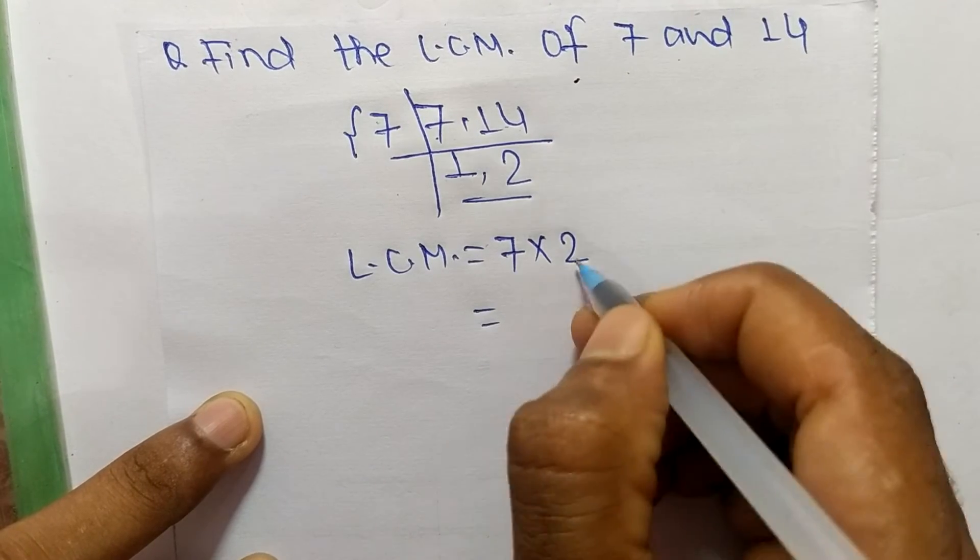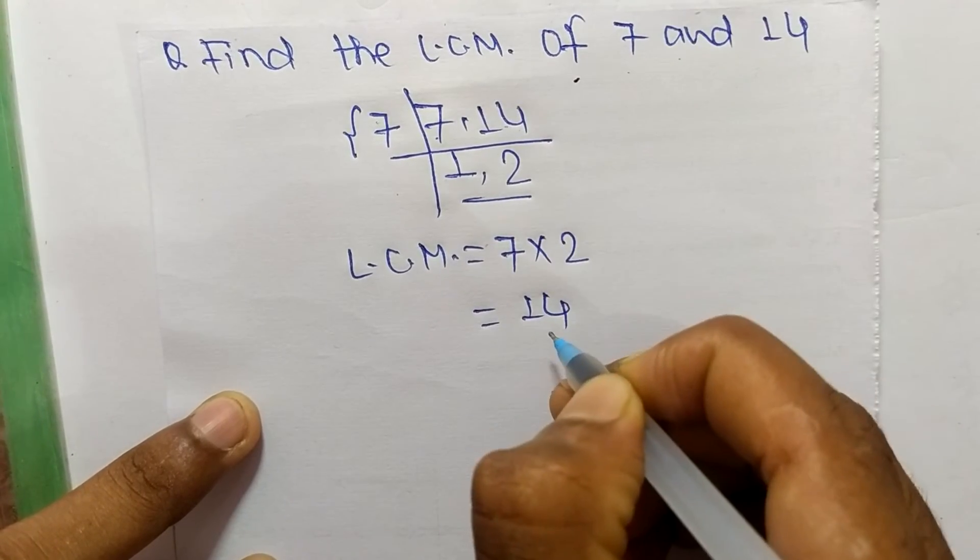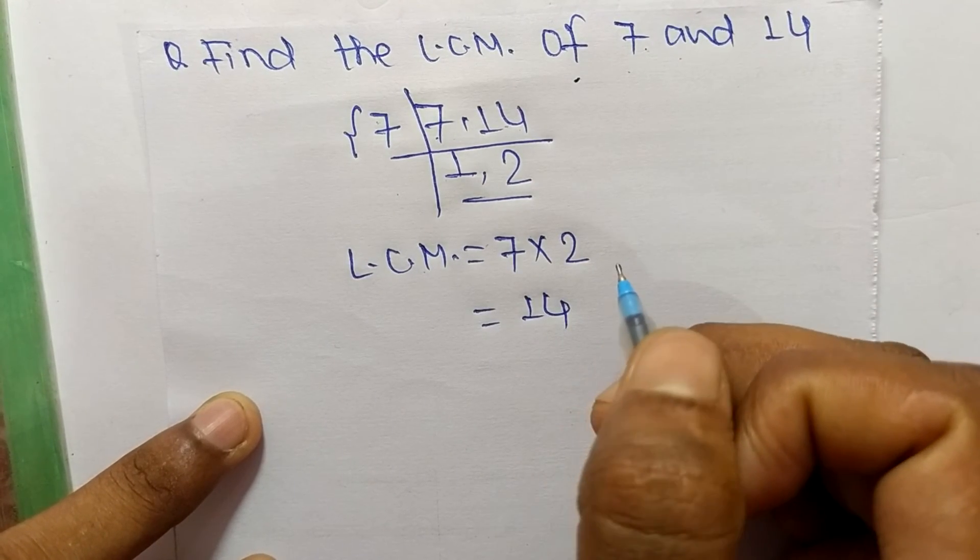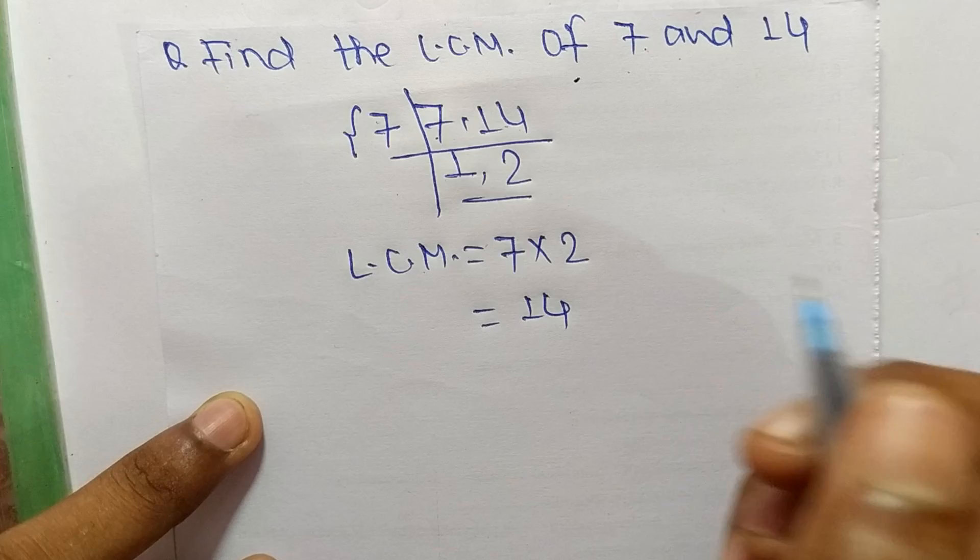So 7 times 2 means it is 14. So 14 is the LCM of 7 and 14. So this much for today, thanks for watching.